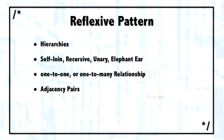The fourth common pattern I want to show you is the reflexive pattern. It's used commonly for hierarchies. Sometimes it's called a unary or self-join type pattern. Another proper term would be the adjacency pairs pattern. It's also called a recursive type pattern because in the hierarchy it could be a person relating to a person relating to a person. It's sometimes called an elephant ear pattern informally because of the way it looks when it's drawn.